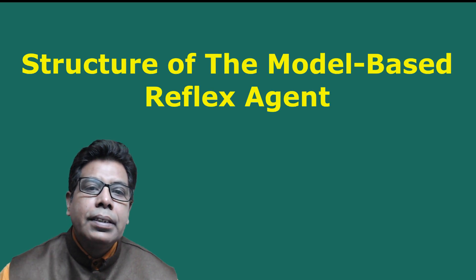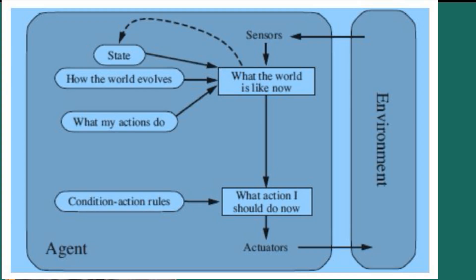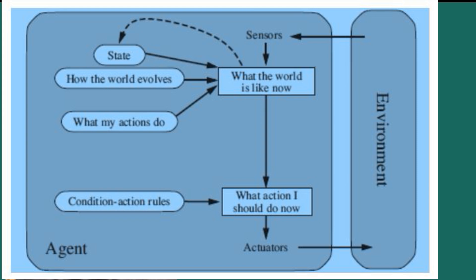Figure 1 shows the structure of the model-based reflex agent with internal state, showing how the current percept is combined with the old internal state to generate the updated description of the current state based on the agent's model of how the world works. Rectangles denote the current internal state of the agent's decision process and ovals represent the background information used in the process. Sensors obtain the current percepts from the environment. The current percept is then combined with the old internal state to generate the updated description of the current state, shown with the ovals — how the world evolves and what my actions do.